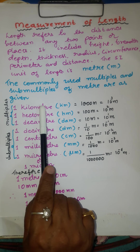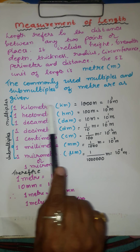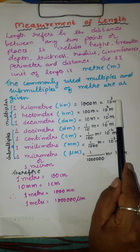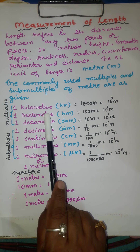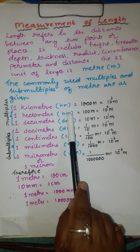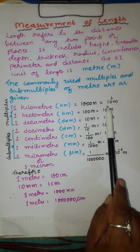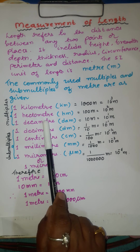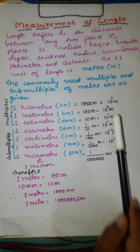1 kilometer: kilo stands for 1000, so 1 kilometer is 1000 meters, written exponentially as 10 to the power of 3 meters. 1 hectometer (symbol: hm): hecto is 100, so 100 meters or 10 to the power of 2 meters. 1 decameter: deca is 10, so 10 to the power of 1 meter.